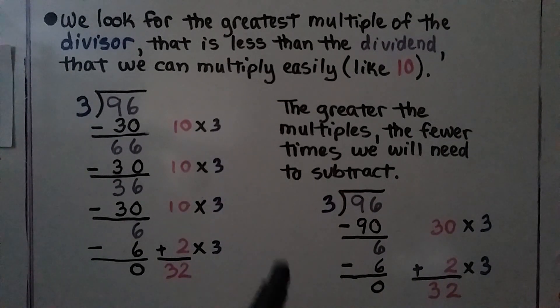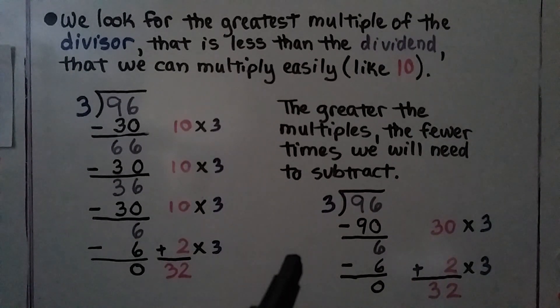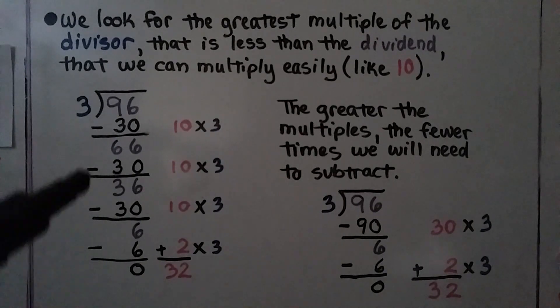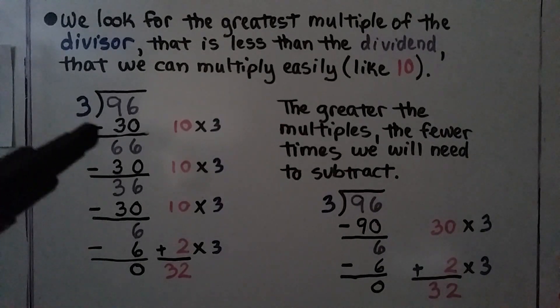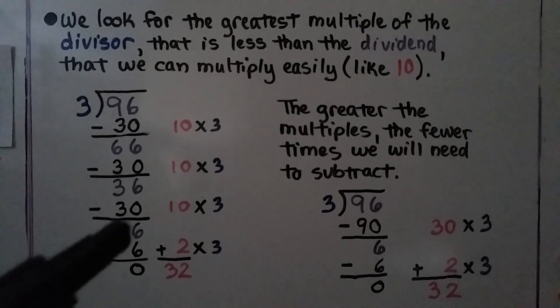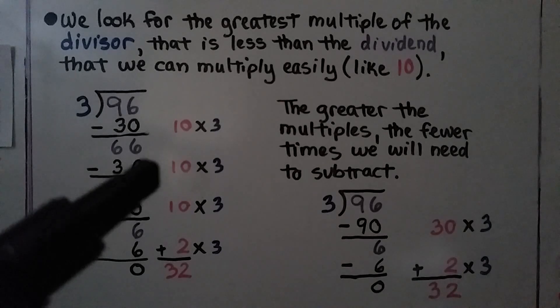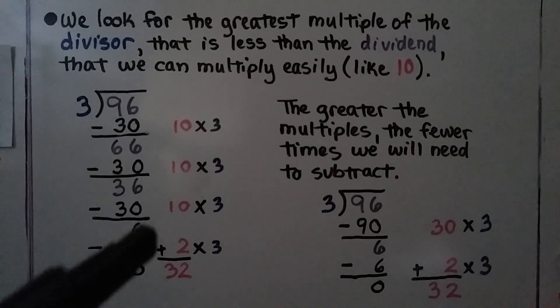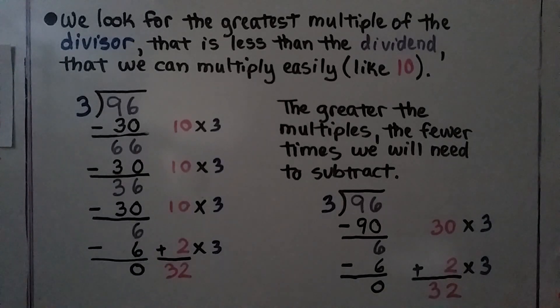The greater the multiples, the fewer times we will need to subtract. So we subtracted 4 times, which gave us 4 partial quotients.